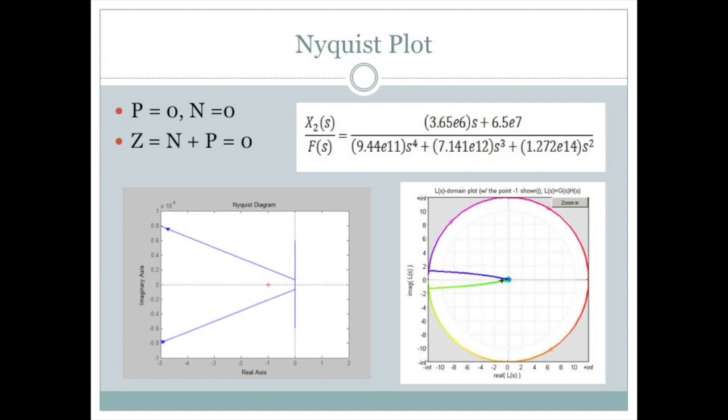From the transfer function, we can see all the poles are on the left half plane, so we can say P is equal to zero. From the Nyquist plot, we get one plot on my left. It doesn't show the right things. You should see the picture on the right, which looks like that because our zeros are on the right of the poles.